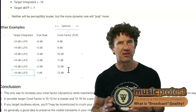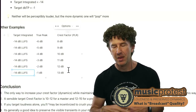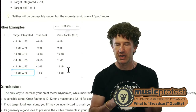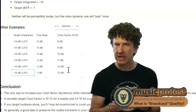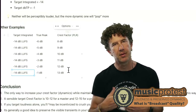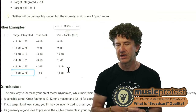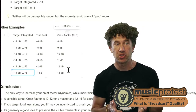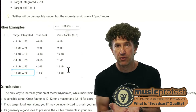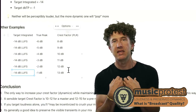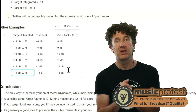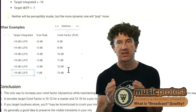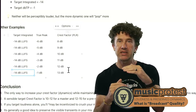I wouldn't go above minus 1 dBTP, even though it might preserve a little more dynamics, because once audio goes into a streaming algorithm you'll get artifacts if you don't have that extra headroom at the top. That's why my table ends at minus 1. I might go to minus 0.5 for a specific platform I know well, but generally I'm making music for a variety of platforms — or platforms I don't fully know — so I target minus 1 as my maximum true peak.